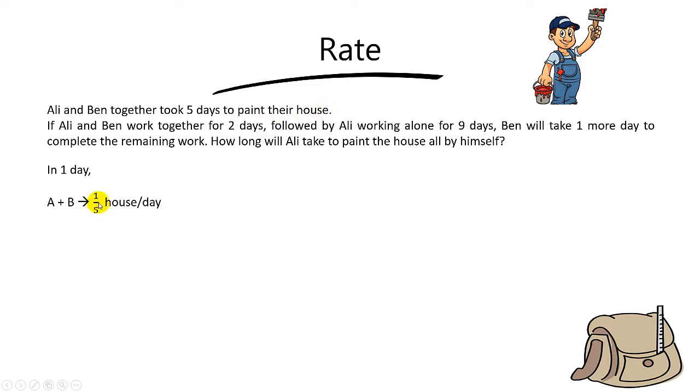And that's the reason is because if 5 days take to paint 1 house, in 1 day they can only complete 1 out of 5 of the house. And this will be the total rates for Ali and Ben.